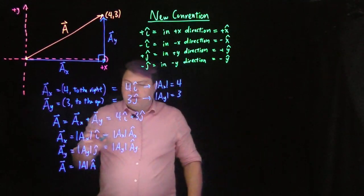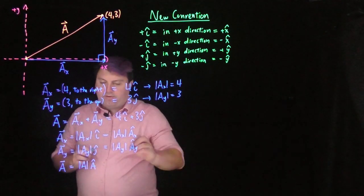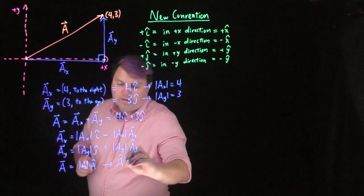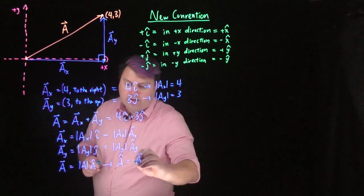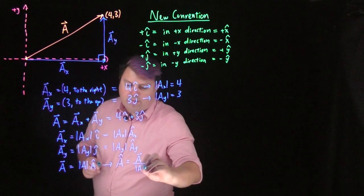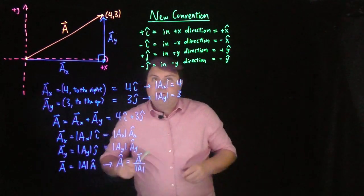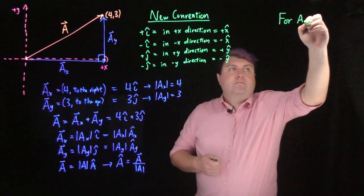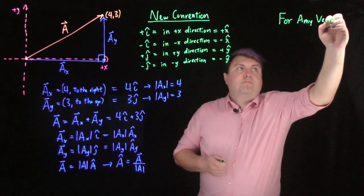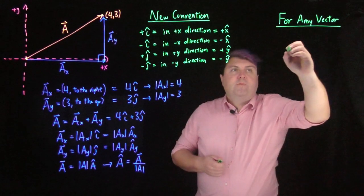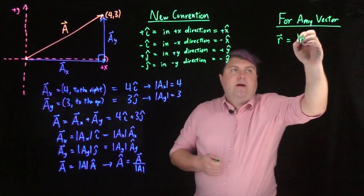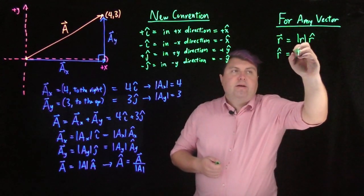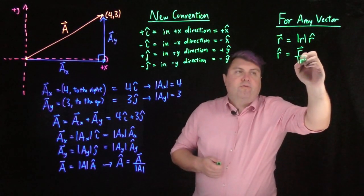Well, I know a lot about this. I can also find a-hat to say that it is the a vector over the magnitude of a. In fact, for any vector, we can write r-vector as the magnitude of r times r-hat, which means we can write r-hat as r-vector over the magnitude of r.